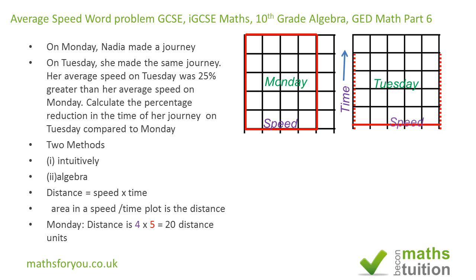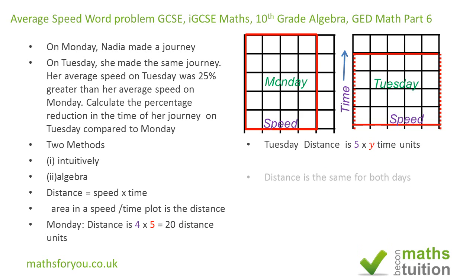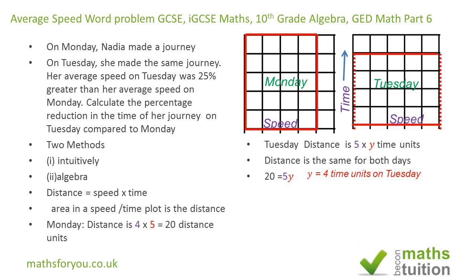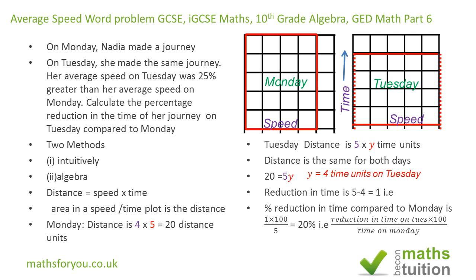We need to find Tuesday's time, since the distance (area) must be the same. Calling Tuesday's time y, we get five times y equals 20, so y equals four time units. That's a reduction of one time unit. The percentage reduction compared to Monday is one over five times 100, which gives us 20%.